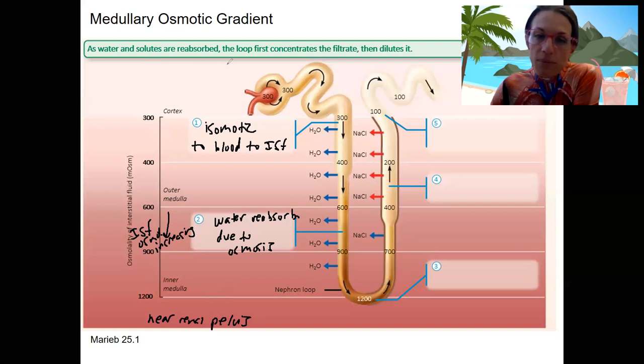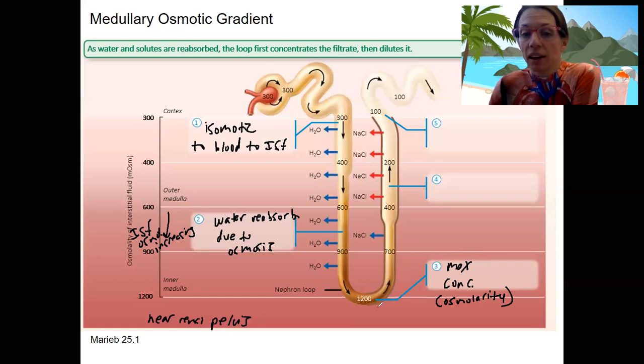This is where water is reabsorbed, first concentrating the filtrate, and then we're going to go back up and dilute it. Here is the maximum concentration in terms of osmolarity that our filtrate is going to get. This depends on how far that loop dips into the medulla. It's going to be equal to the osmolarity in the renal medulla wherever this nephron loop dips down to. A cortical loop would not reach that same max concentration.